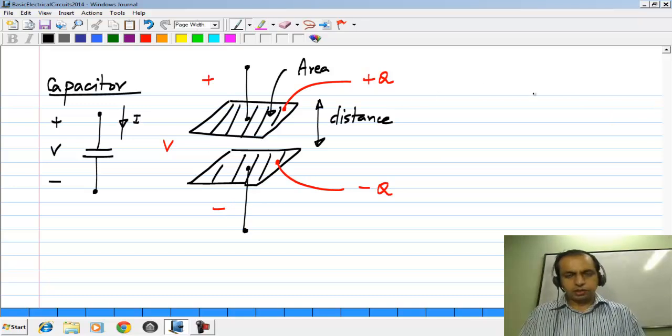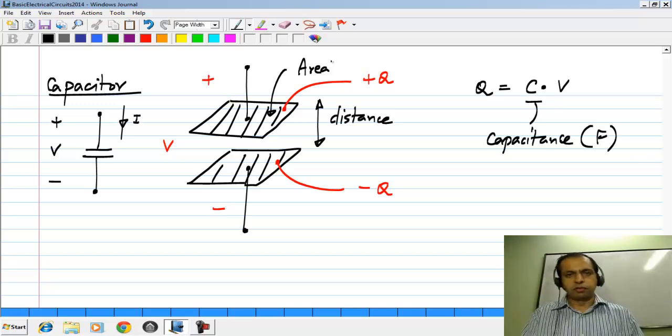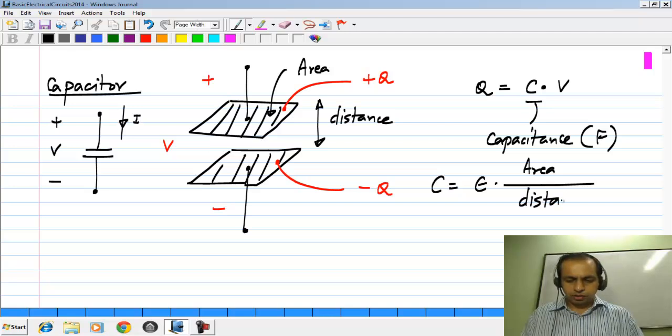The relationship between Q and V happens to be linear with a proportionality constant C, which is called the capacitance. C is the capacitance measured in farads. If you have a one farad capacitance, you apply one volt across it, there will be one coulomb of charge on each of the plates. And this C itself is given by some permittivity times area divided by the distance.